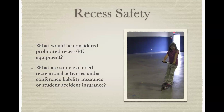What does your conference outline, or risk management for that matter, outline as prohibited material or equipment that should not be used at a school? Because if a student gets injured, the injury would not be covered by student accident insurance or the school's insurance. So you can get that information talking with your board, your superintendent, et cetera. Recess safety is really important.